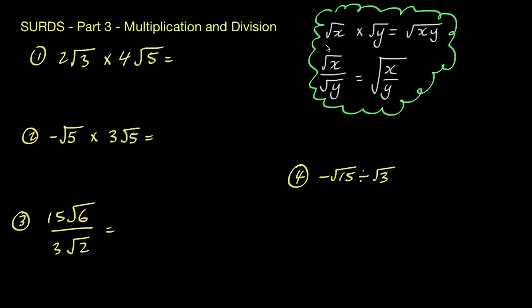In our first video on surds, we saw that we could use these rules to multiply and divide them. What we're going to do in this video is take it a step further. We're going to put some values on the front of the surds and see what happens. We're also going to look at expanding out some surds with brackets around them.